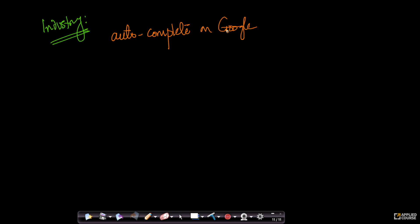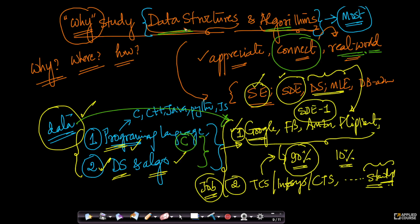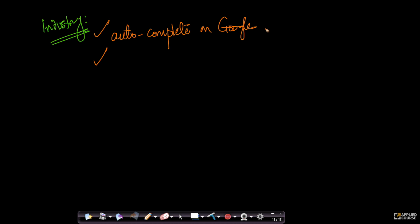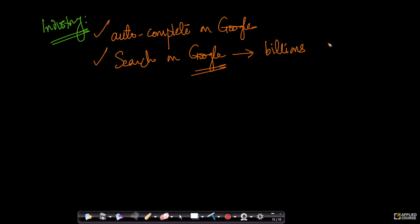By the end of this course on data structures and algorithms, you will be able to build a simple Google autocomplete — I promise you that. Similarly, the whole Google search engine itself is a bunch of extremely advanced data structures and algorithms. Google search happens billions of times and extremely fast. Imagine the challenge of providing search results for billions of people searching across the world at extremely fast speeds. This is happening because of some very interesting data structures and algorithms that Google uses. I would actually call Google a data structures and algorithms company because they use some of the most advanced algorithms and data structures day in and day out to optimize their systems.